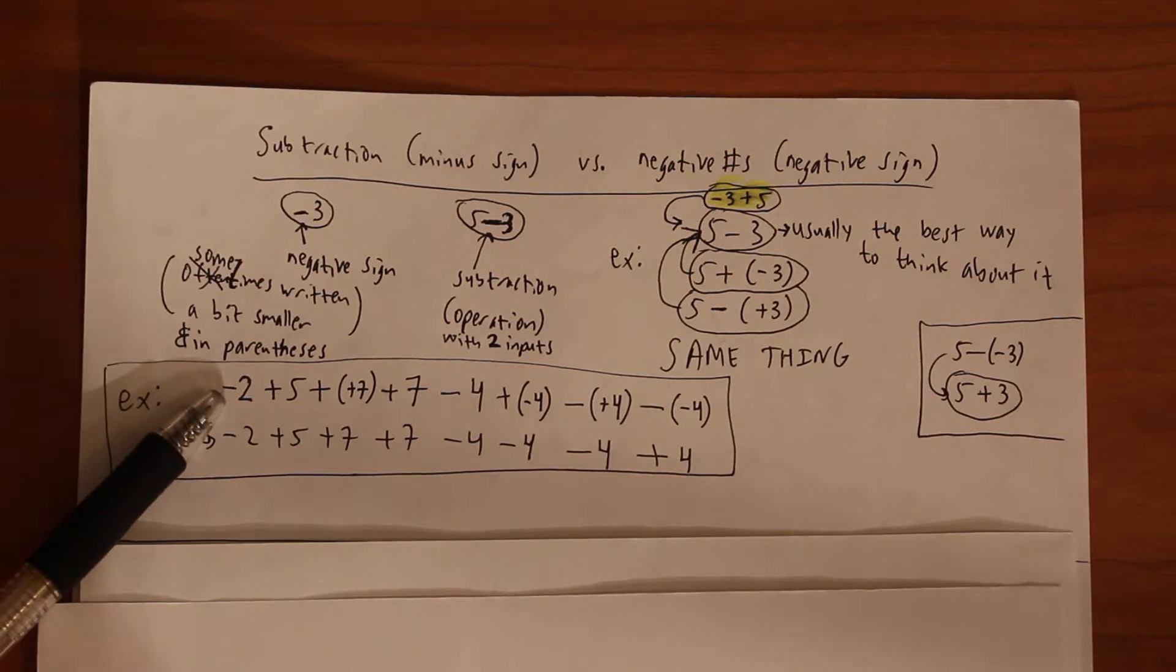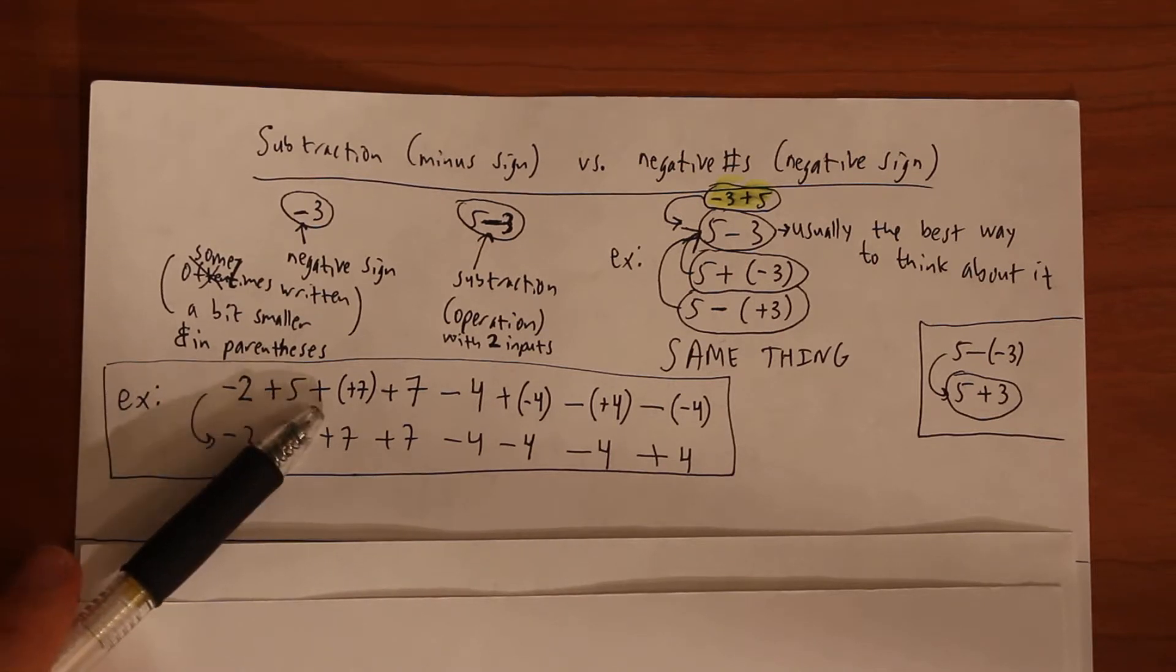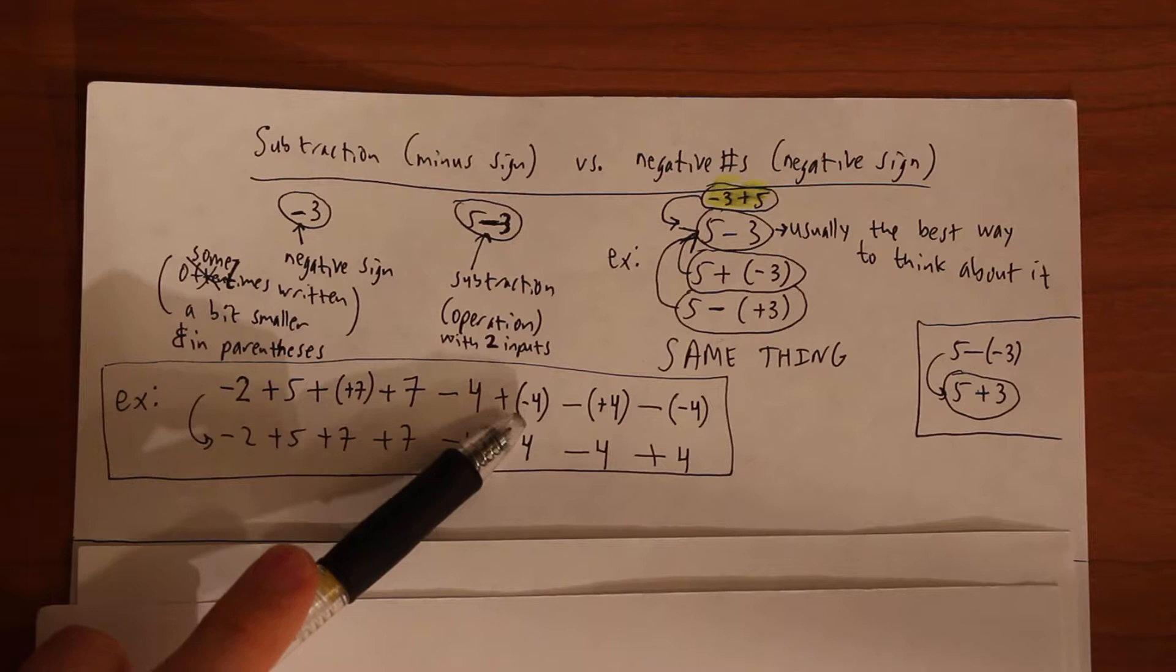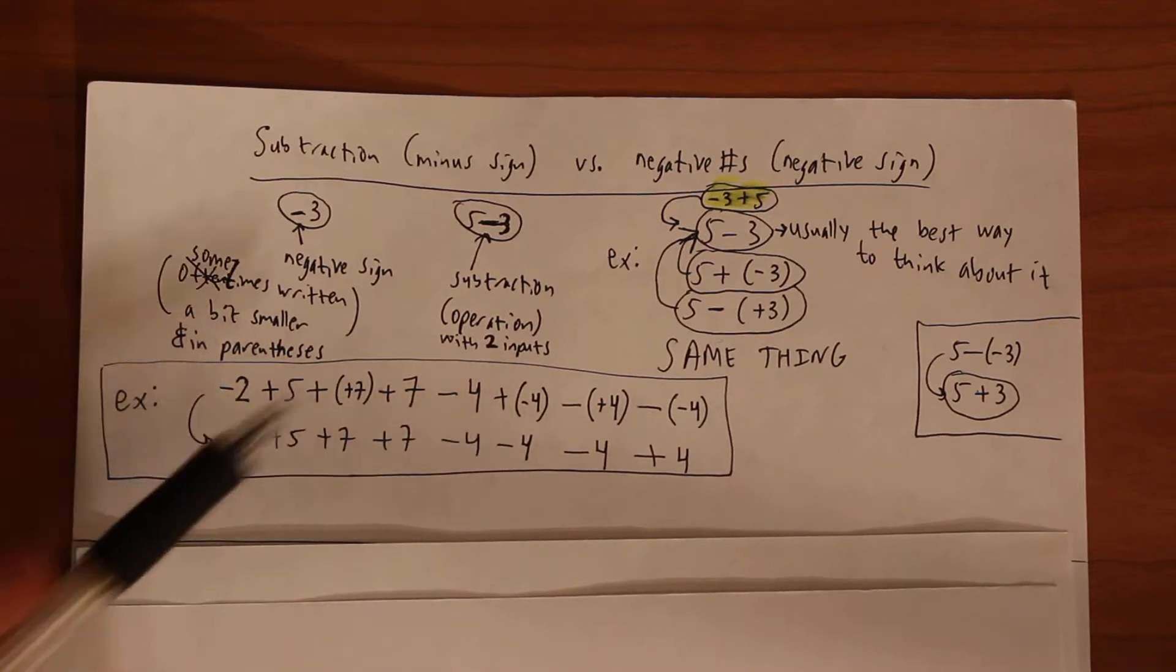So how do you practice this? Make up some monster example like this where you have negative signs - that's a negative 2, that's an addition, that's an addition, that's a positive sign, that's an addition, subtraction, addition, that's a negative sign - that's not a minus 4, that's a negative 4.